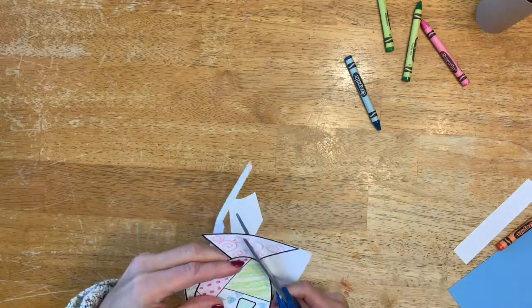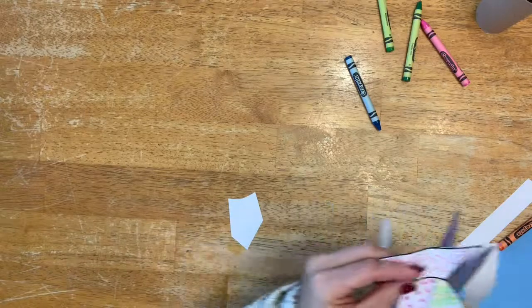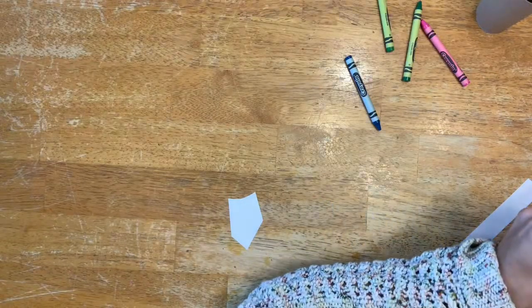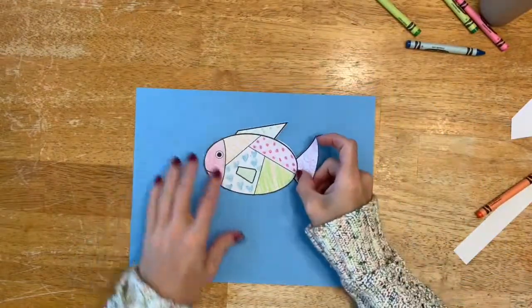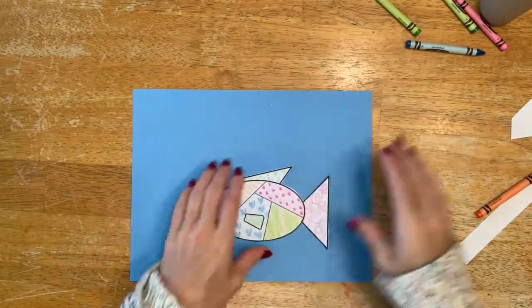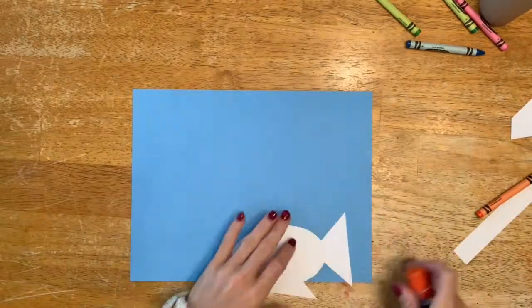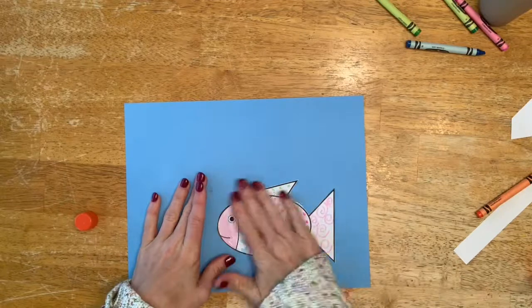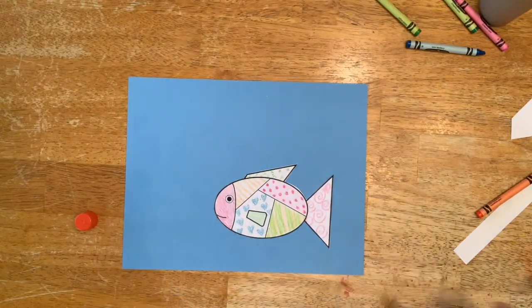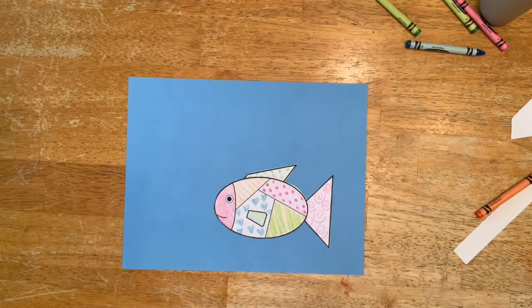I try to kind of monitor how everyone's feeling. We want to make sure that it's fun and everyone is ending up with something that they are really proud of at the end. Now we have our fish, and they're going to glue their fish onto their paper. You've got your fish all glued onto the blue paper so it looks like he's in the water.